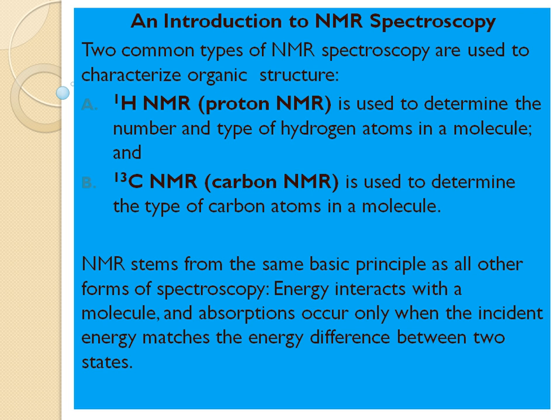First, we see the introduction of NMR spectroscopy. There are two common types of NMR spectroscopy normally used in organic structure determination or characterization. The most important is H1 NMR or proton NMR, which is used to determine how many types of hydrogens are present in a given molecule and how many of each type there are.